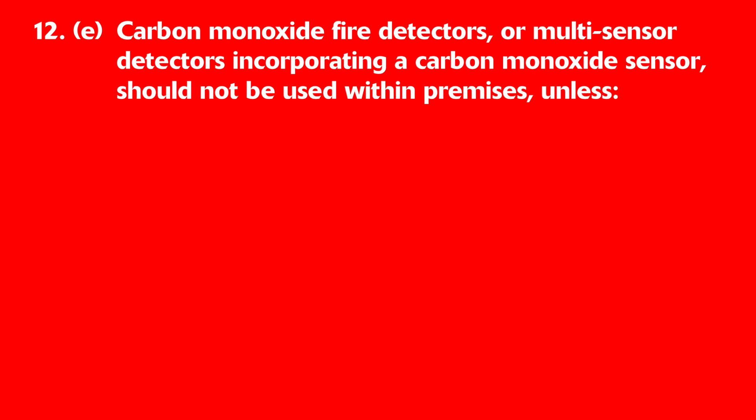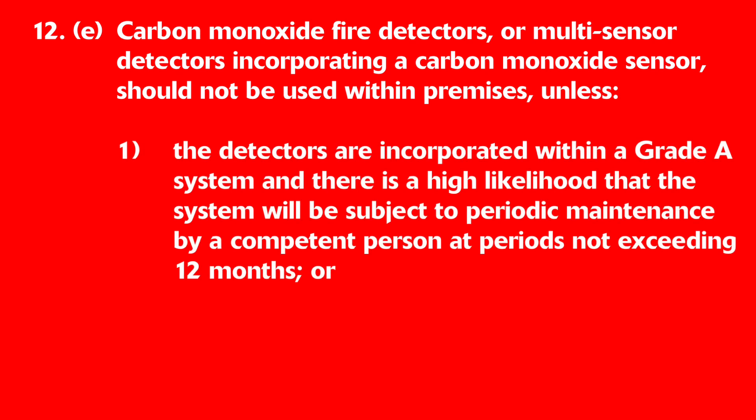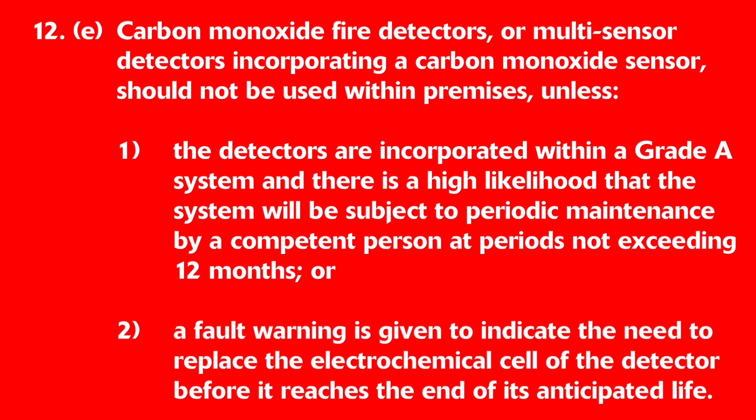The other type mentioned in the NIC Snags and Solutions book is the carbon monoxide fire detector. These operate differently to carbon monoxide warning detectors and will detect CO from smouldering fires and fires where the rate of burning is controlled by air supply. However, BS 5839-6 clause 12e states that carbon monoxide fire detectors, or multi-sensor detectors incorporating a CO sensor, should not be used unless incorporated within a grade A system and subject to periodic maintenance by a competent person at periods not exceeding 12 months, or a fault warning is given to indicate the need to replace the electrochemical cell before it reaches the end of its anticipated life. The CO detectors from BG Electrical are warning detectors rather than fire detectors, so they would never be used in place of a smoke detector. Reassuringly, they do have an end-of-life fault warning and are suitable for detecting CO from faulty fuel-burning appliances.